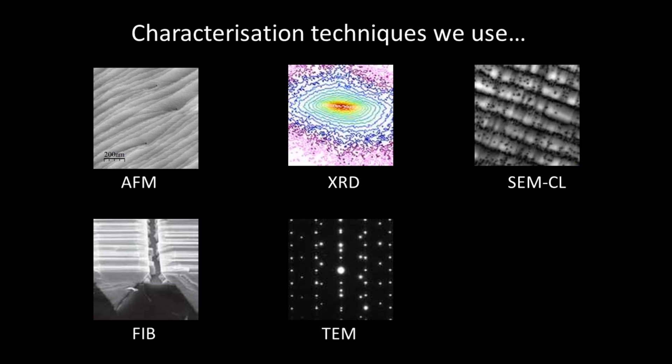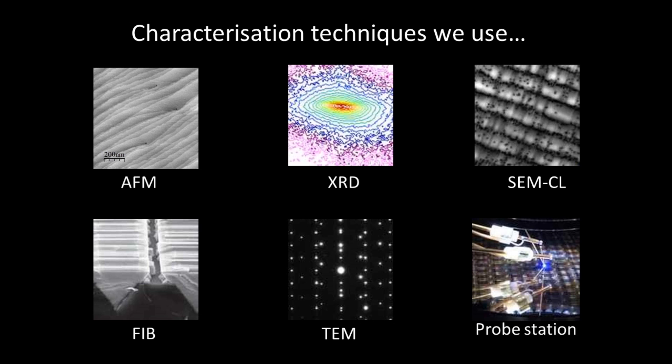We use all these techniques to characterize both materials and full devices. But if we want to check the performance of the devices, we actually have what we call a probe station, which allows us to measure in some detail how much light a device gives out and what its electrical properties are,